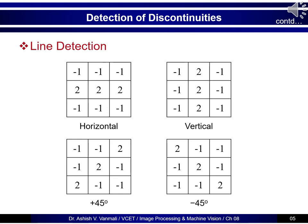To detect a horizontal line, the 3x3 mask has the first row as minus 1, the second row of 2, and the third row again as minus 1. For the vertical mask, the first and last columns are minus 1 while the center column has value 2. To detect the diagonal edge along plus 45 degrees, the value 2 is placed along the 45-degree diagonal and the remaining elements are minus 1. For minus 45 degrees, the values along the minus 45-degree diagonal are 2 and the remaining elements are minus 1.